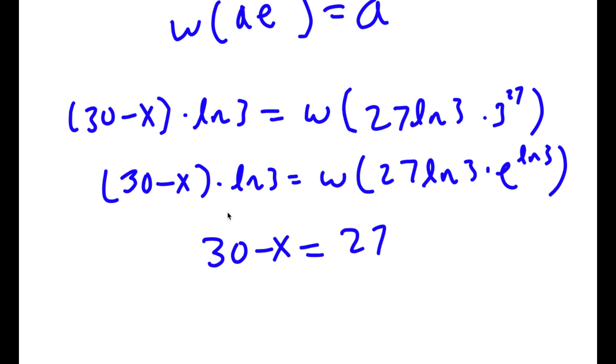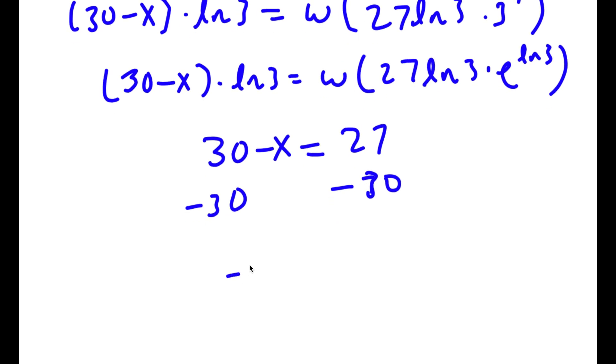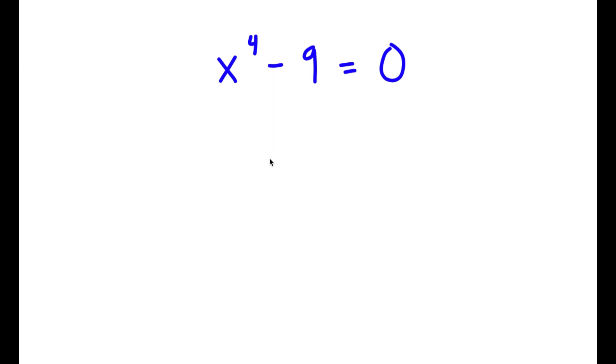Now I have the simple equation 30 minus x equals 27. Subtracting 30 from both sides gives negative x equals negative 3, meaning x equals 3. So x equals 3 is the answer to this problem.